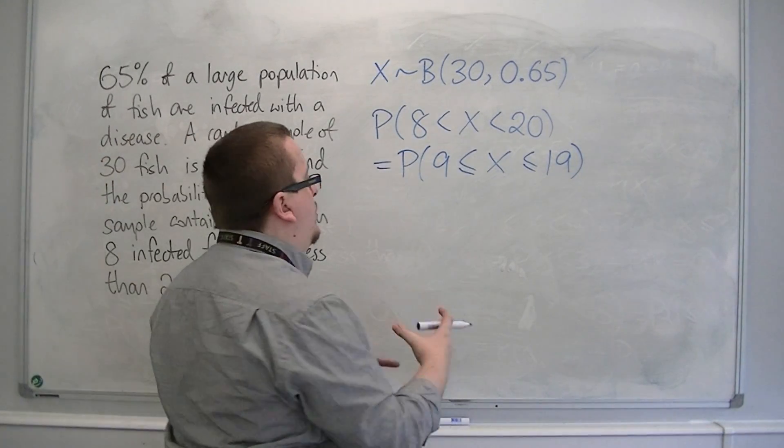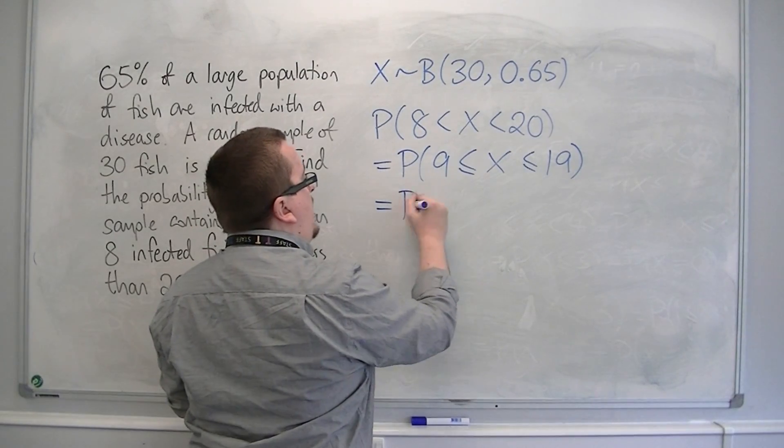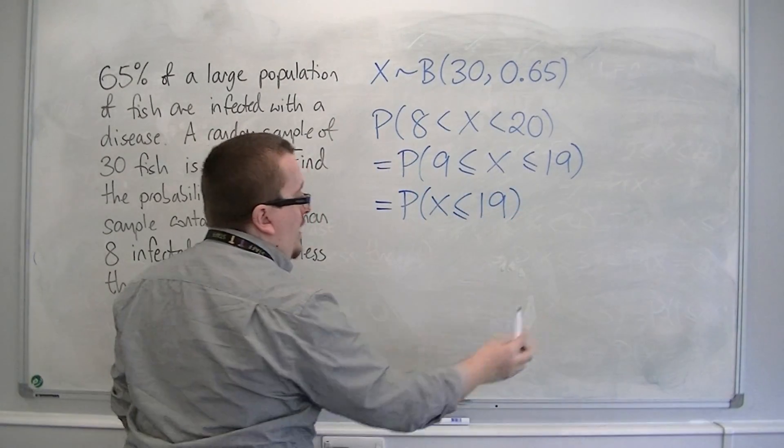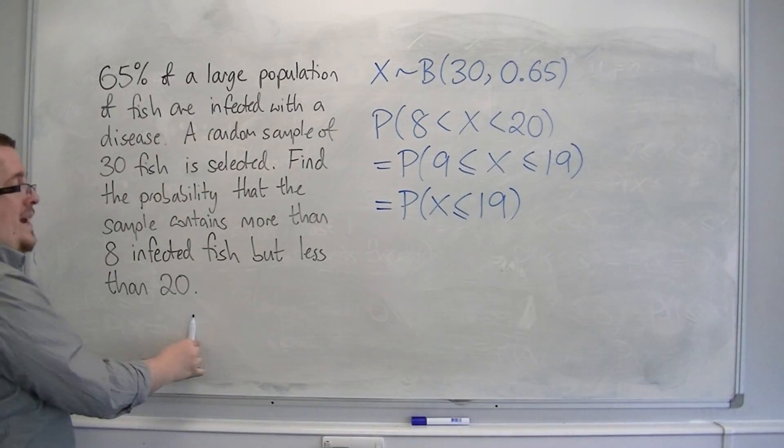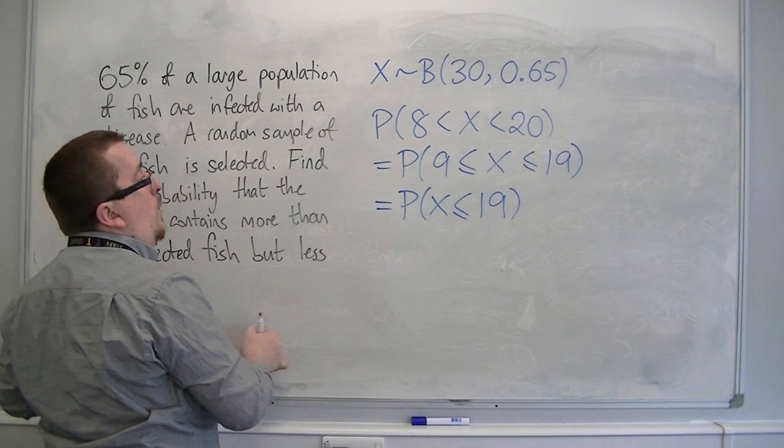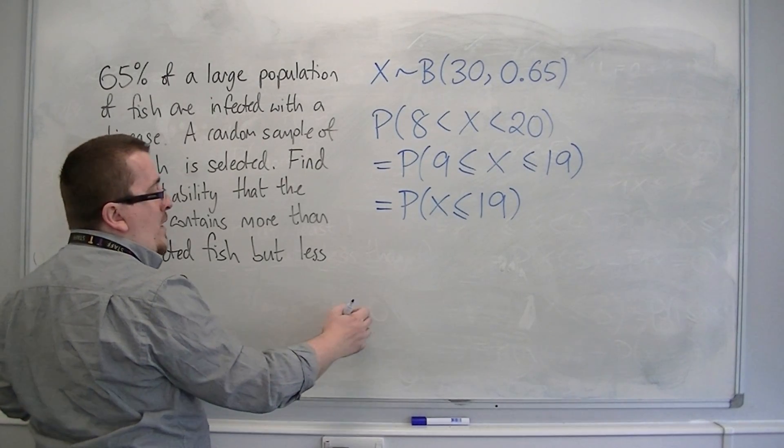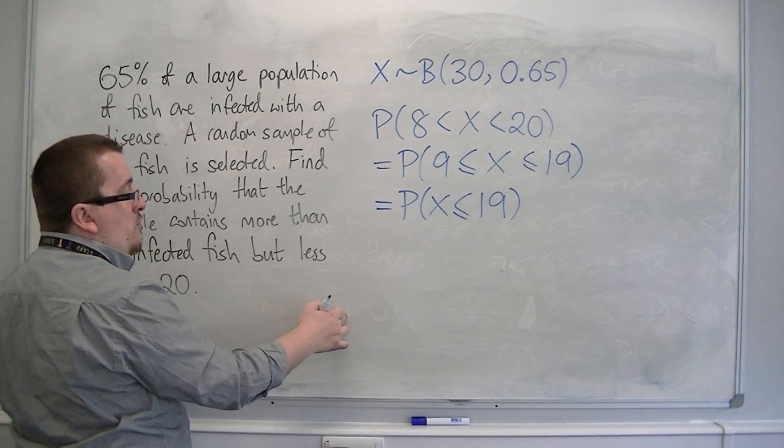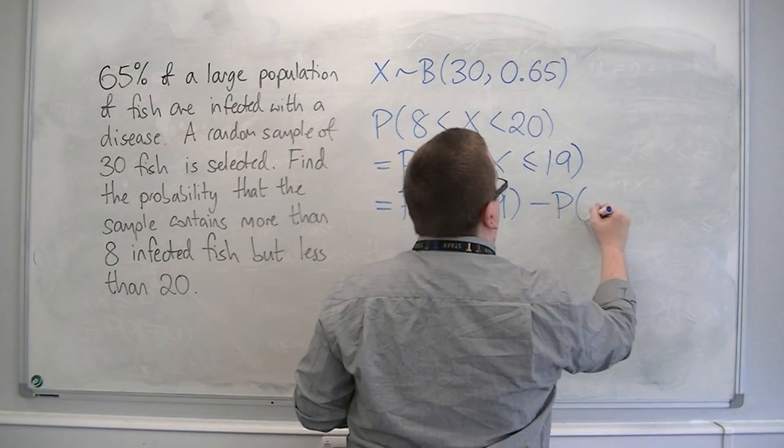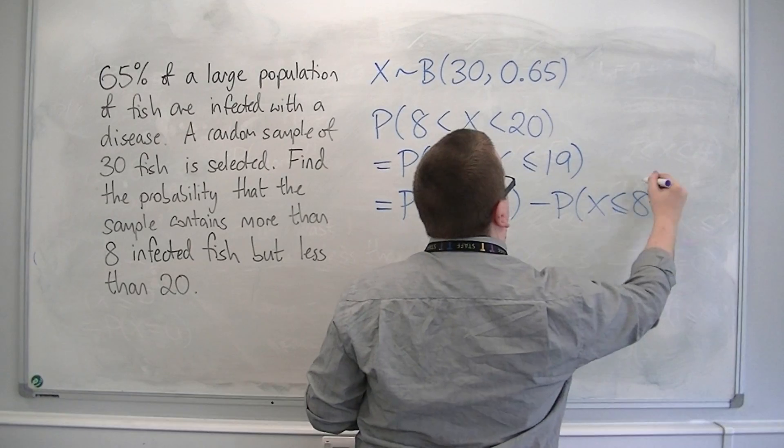And so to calculate it, this would be the probability that X is less than or equal to 19. So that includes from 19 all the way down to 0. But we don't want the values from 0 up to 8, because we want 9 upwards. So 0 to 8 we don't want. And so we want to subtract the probability of X being less than or equal to 8.